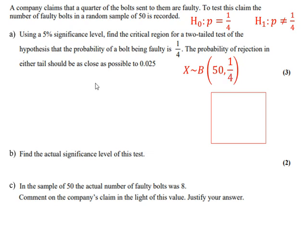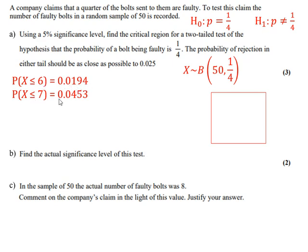For the lower tail, we want P(X ≤ k) either side of 0.025. P(X ≤ 6) = 0.0194, just below 0.025; P(X ≤ 7) is just above 0.025. The key question is which is closer to 0.025 — and 0.0194 is closer, so the lower critical region is X ≤ 6.